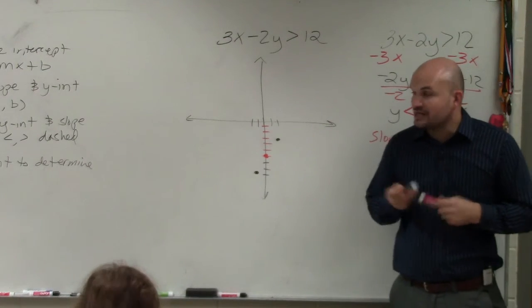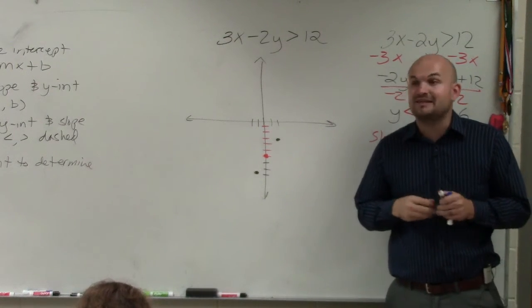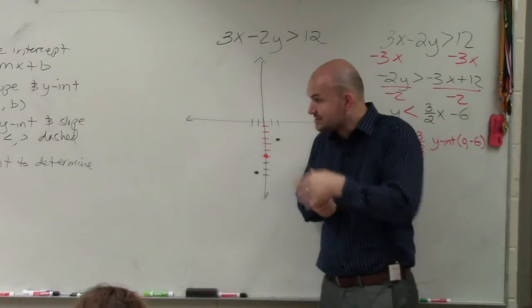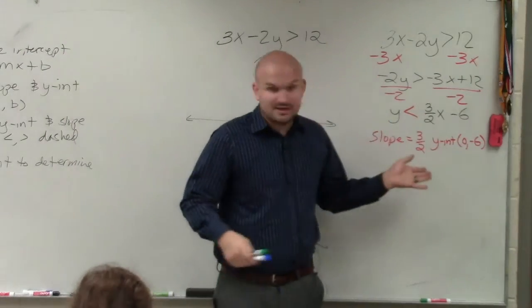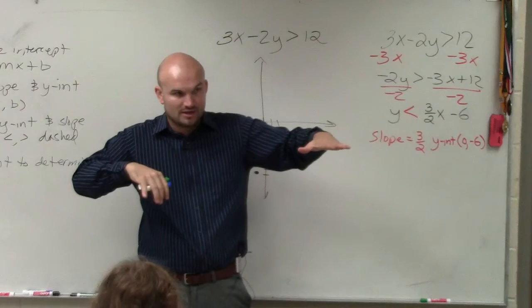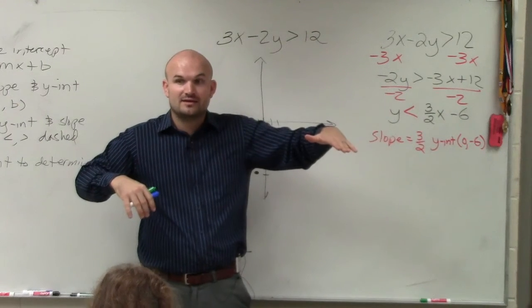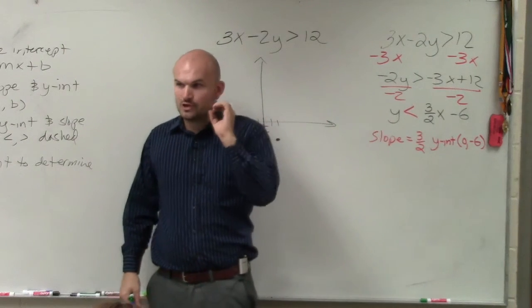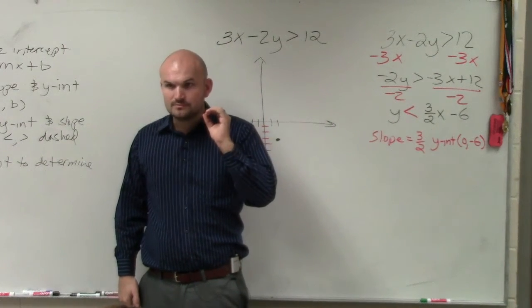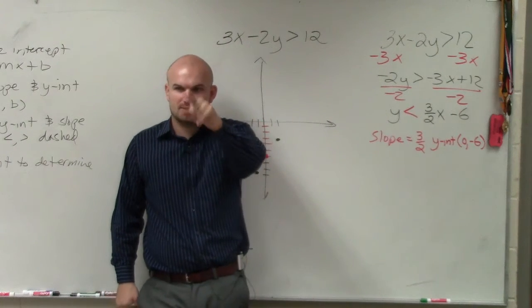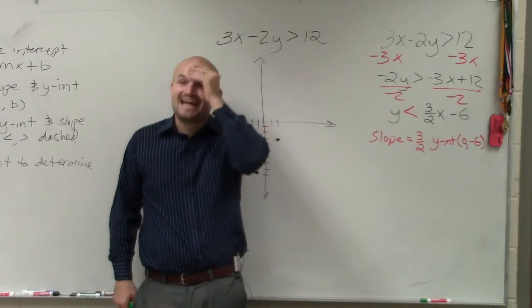So now we're going to connect our graphs, but remember we're graphing inequalities, not equations. When we did one variable inequalities, when it was less than or greater than, our solution point was an open circle, right? Does anybody remember what we said? Why it was? Because it's not included in the solution. Not included.